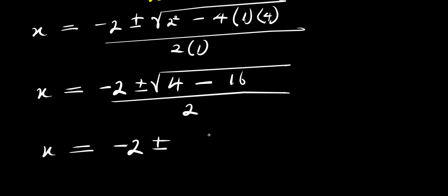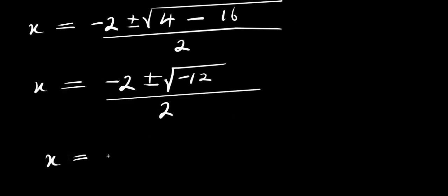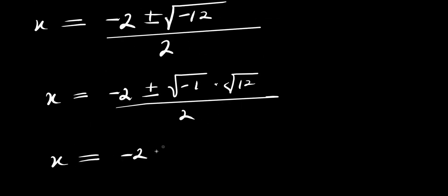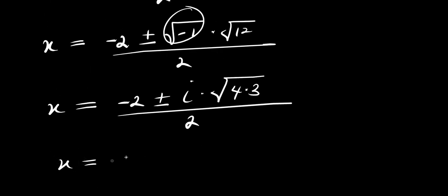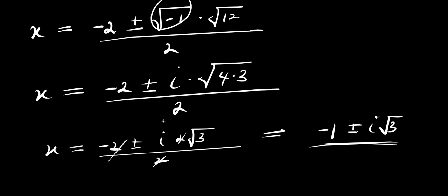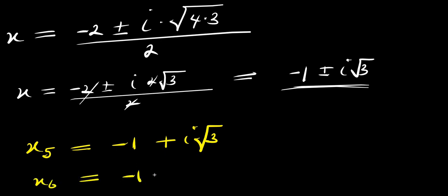We have x equals negative 2 plus or minus square root of negative 12, divided by 2. Splitting as square root of negative 1 times square root of 12, where 12 equals 4 times 3, we get i times 2 root 3 divided by 2. The 2s cancel, giving x equals negative 1 plus or minus i root 3. So x5 equals negative 1 plus i root 3, and x6 equals negative 1 minus i root 3.